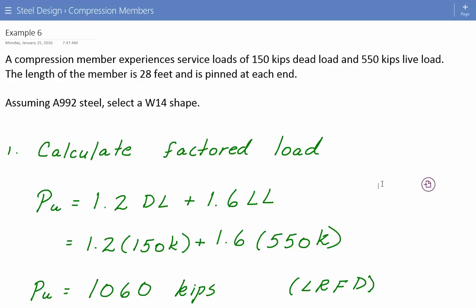Assuming A992 steel, select a W14 shape. So this is a design problem and we're asked to find a W14 section which satisfies all these requirements.